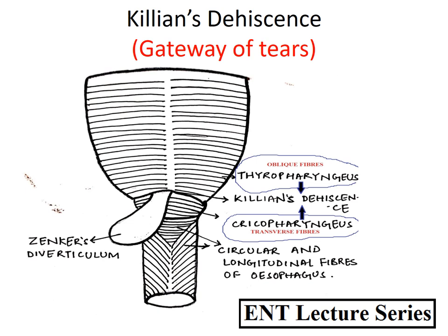These two fibers I have encircled in blue, and in between these fibers there is a potential area which is a very weak area. That part is called Kilian's dehiscence.